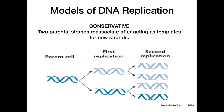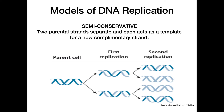Moving on to the semi-conservative model, which is actually what happens — this is the actual way that our DNA is replicated. The two parental strands are going to separate and each of those strands is going to act as a template for a new complementary strand. Each DNA molecule is then comprised of one new strand and one old strand, and that process continues with the two strands separating, each getting a new complementary strand, and becoming a new DNA molecule.